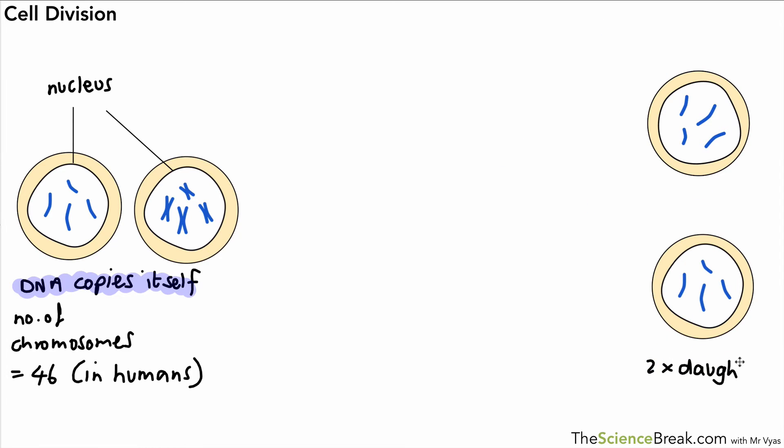When we finish the process, we end up with two daughter cells, and they each have the exact same number of chromosomes. In humans, there's 46. I've only drawn four in these diagrams because it would be confusing to draw all 46, but we've got 46 in each new cell.